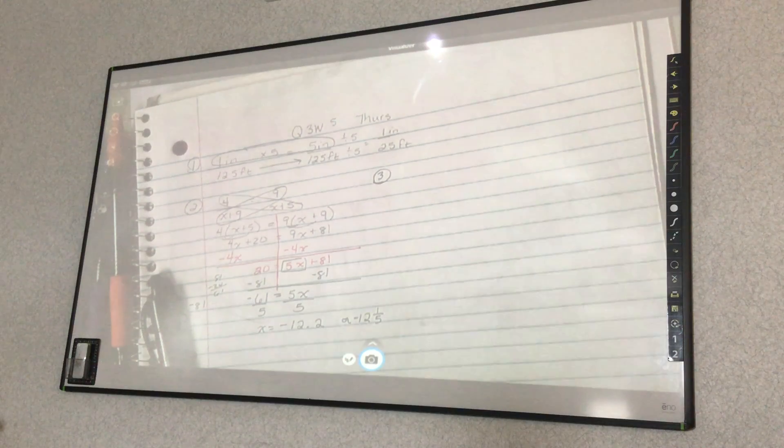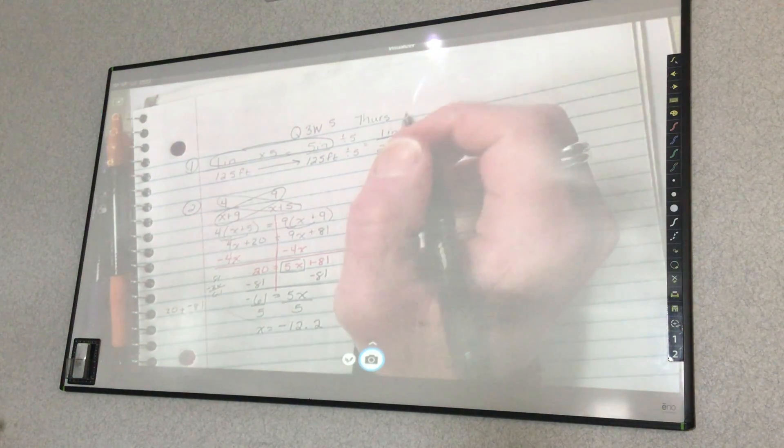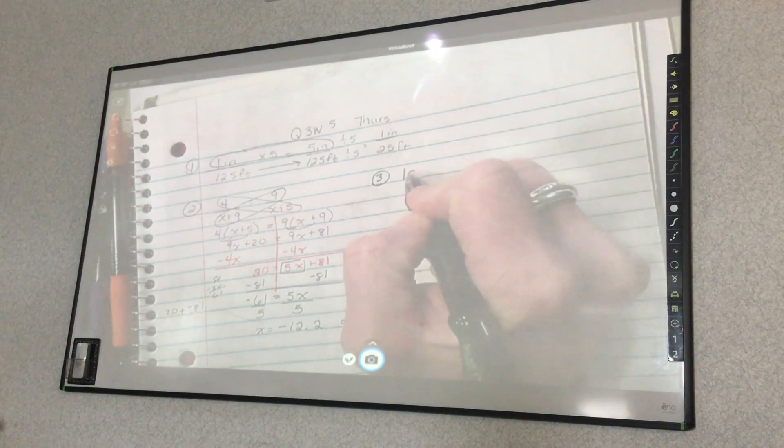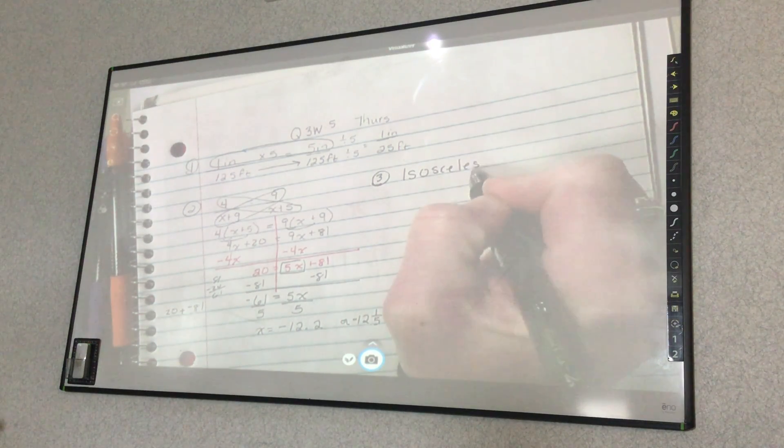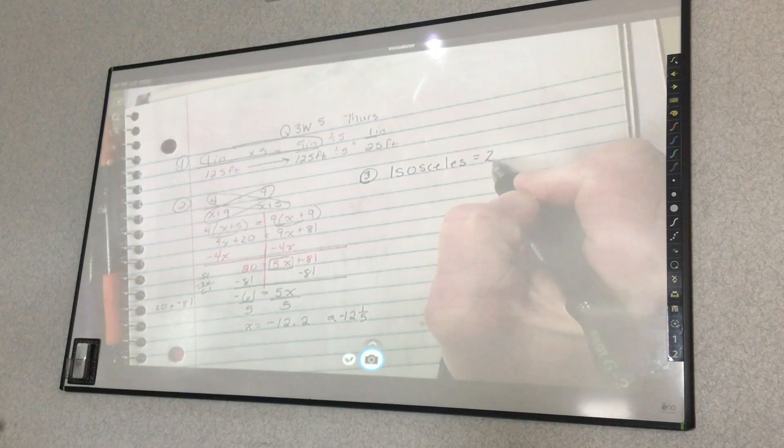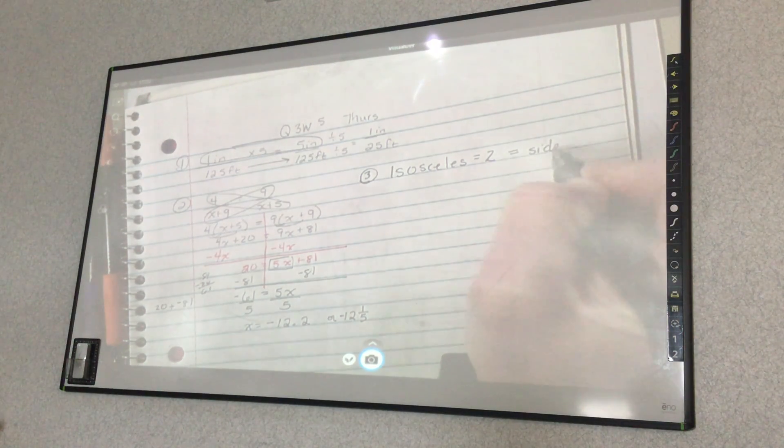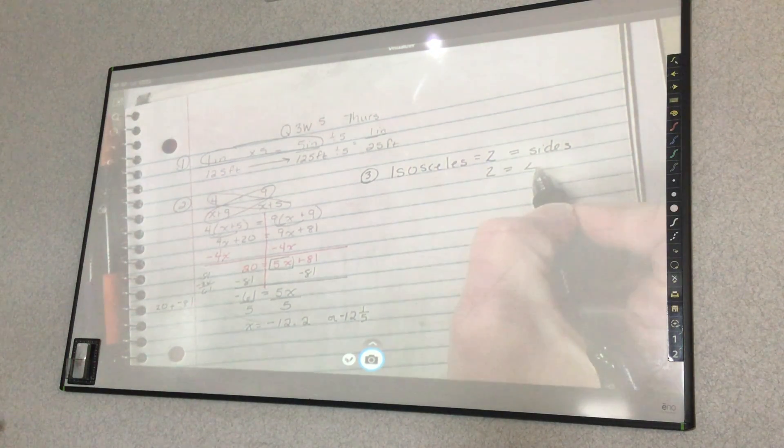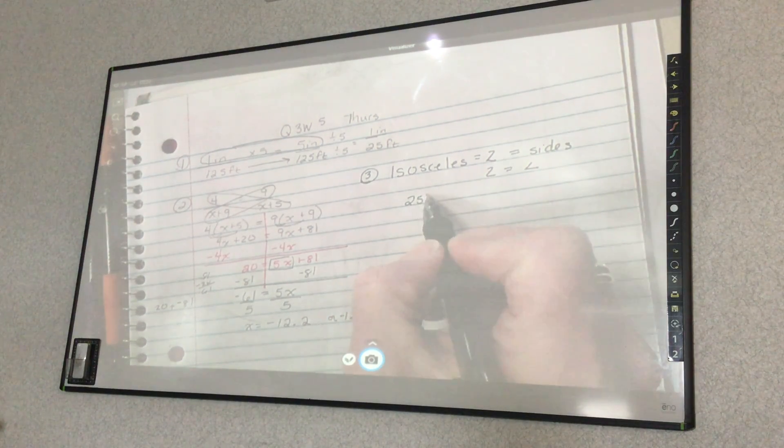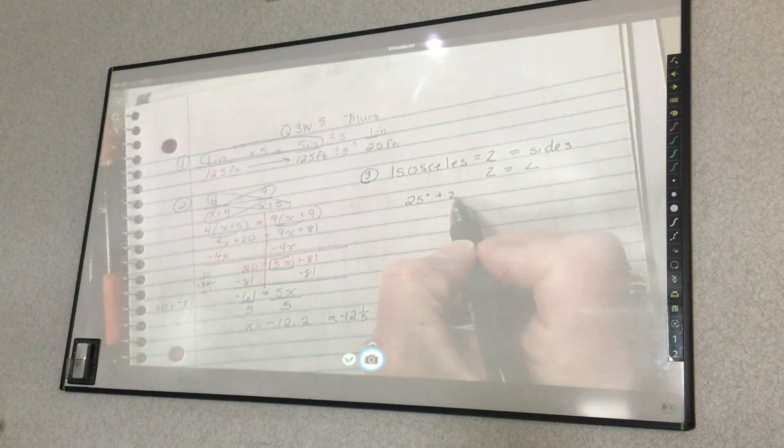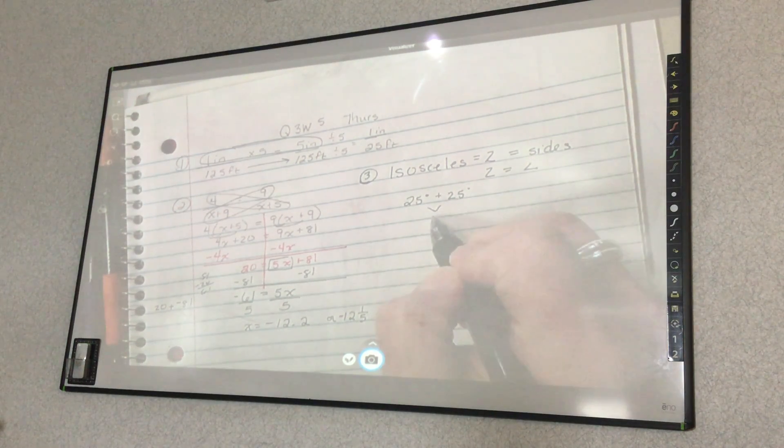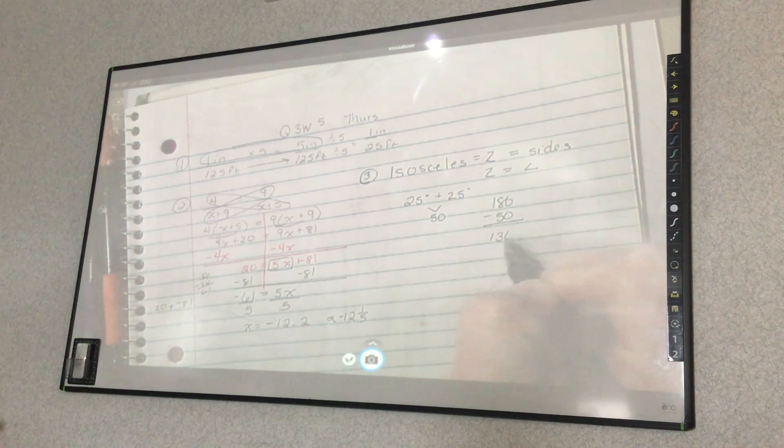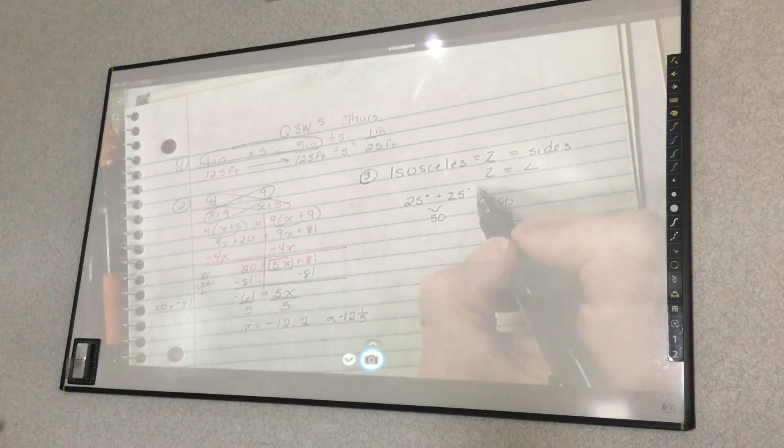Number 3. So if it says one angle in an isosceles triangle is 25 degrees, what are the other possible angle measurements? So first, you need to know that it is isosceles. Isosceles means it has two equal sides, right? If it has two equal sides, it also has two equal angles. So if one of the angles is 25, doesn't the other one have to be 25? Yeah, so 25 plus 25 is 50. And then I take 180 minus 50, which is 130. So it could be 25 plus 25 plus 130.